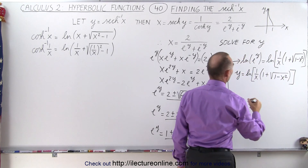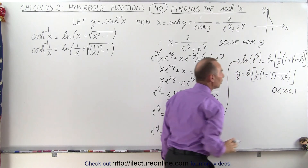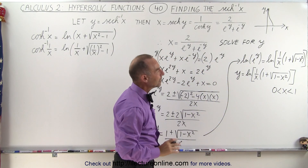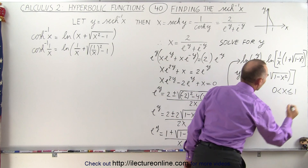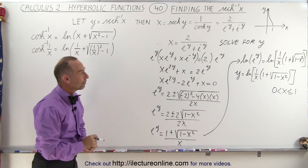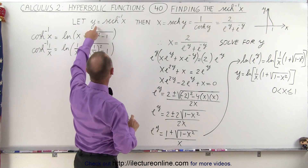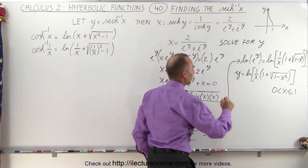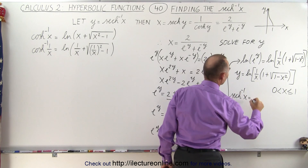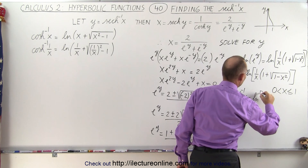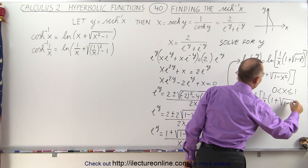So we get Y is equal to the natural log of 1 over X times the quantity 1 plus the square root of 1 minus X squared. Based on the graph, we realize that 0 should be smaller than X, which should be smaller than or equal to 1. That's the range of possible values for X. Therefore, the inverse hyperbolic secant of X is equal to the natural log of 1 over X times 1 plus the square root of 1 minus X squared.